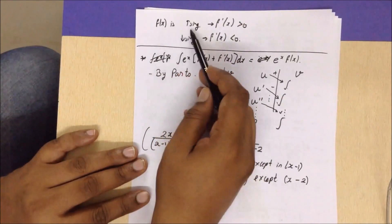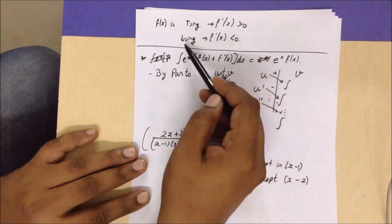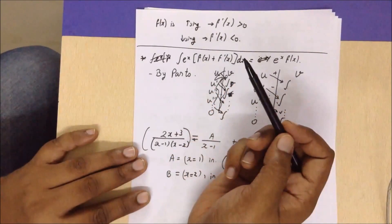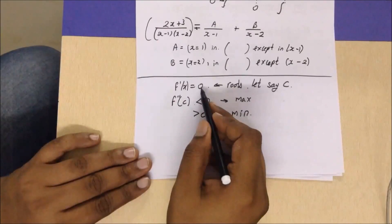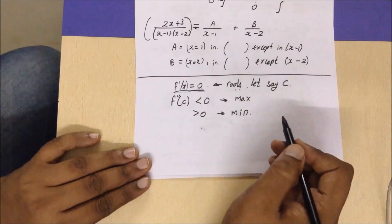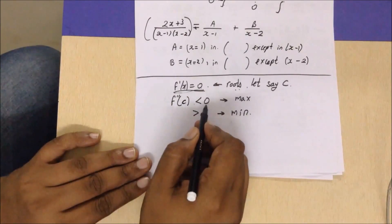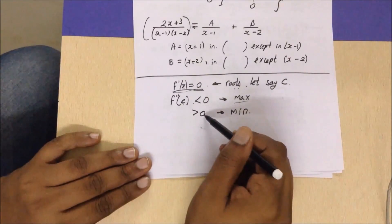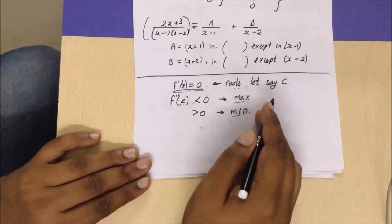Under application of derivatives: if you want to find whether a function is increasing or decreasing, the first derivative greater than zero means increasing, and first derivative less than zero means decreasing. For maxima and minima, find the roots of f'(x) = 0. If the root is c, then if f''(c) < 0, the function has a maximum at c; if f''(c) > 0, the function has a minimum at c.